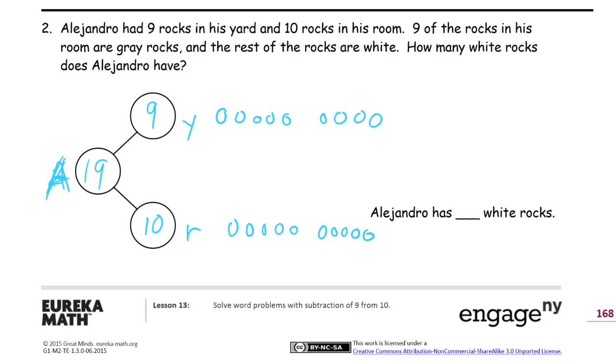Nine of the rocks in his room, that's these right here, are gray rocks and the rest are white. How many white rocks does he have? So these are the gray ones. So all the rest of them are white. That's these nine up here, plus one more, which is 10. 10 white rocks. We're looking at this as 19 minus 9, which we crossed out, 10 left.